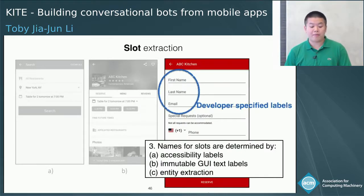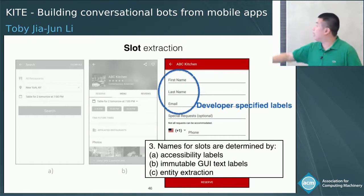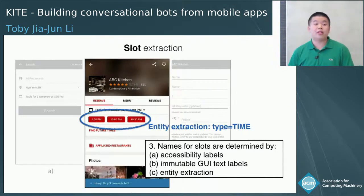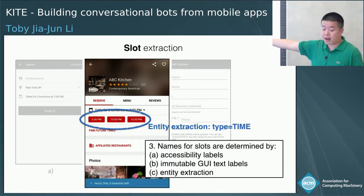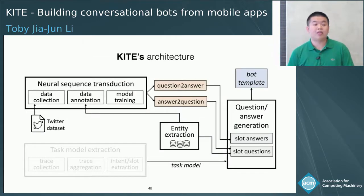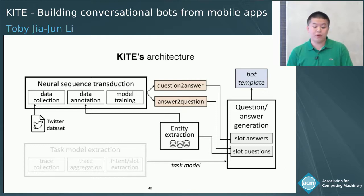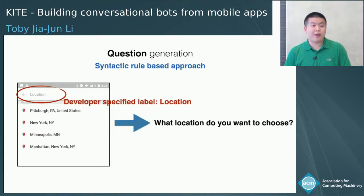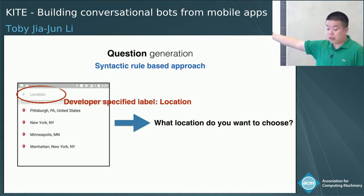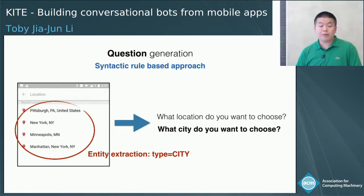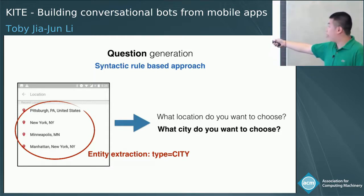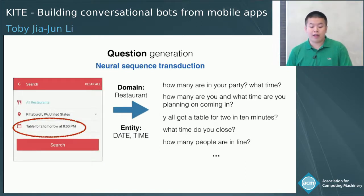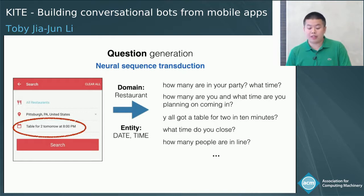Kite will then determine the name for each slot. Some UI elements contain developer-specified labels such as first name, last name, and email. For others, we perform entity extraction on those values — for example, for slots with time values, we name this 'time.' Once we extract a task model, Kite will generate questions and answers for each intent and slot to support user conversation. It takes a hybrid rule-based and neural network approach. For slots with semantically meaningful developer-specified labels, we use a simple syntactic rule to generate questions. Similarly, for those with semantically meaningful entity extraction results, we identify the entity type and generate a question using simple syntactic rules. For slots with no meaningful label, no entity extraction results, or multiple entities, and for generating more natural-sounding questions, we use a neural network-based sequence-to-sequence model.